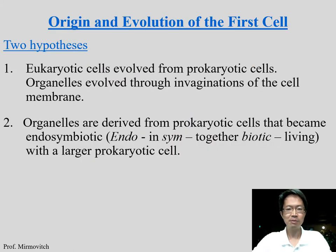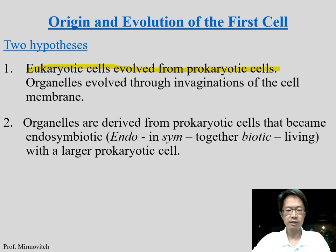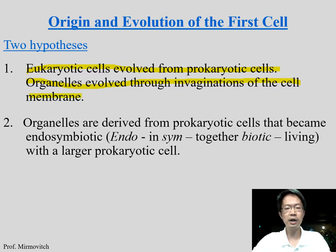There are two hypotheses about the origin and evolution of the cell. Eukaryotic cells evolved from prokaryotic cells — this is confirmed, because eukaryotic cells are more complicated than prokaryotic cells. Organelles evolved from invagination of the cell membrane, similar to endocytosis.